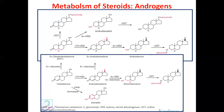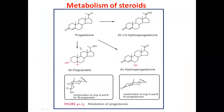Progesterone is converted to pregnanediol, and also to 6α-hydroxyprogesterone and 20α-hydroxyprogesterone — three metabolic products from progesterone. The name indicates 5β — the bold line means beta — and reduction of the double bond ketone to hydroxyl. The dotted line at the 6th position indicates 6α-hydroxyprogesterone.